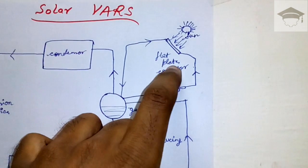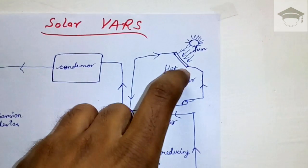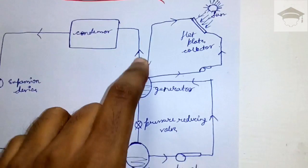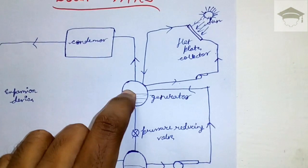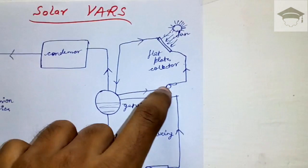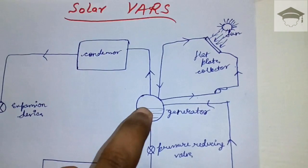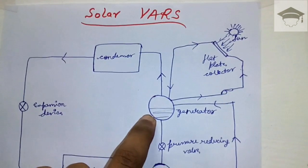This water gives the energy in the generator, then it is recirculated. The concentrated solution takes the heat from this circuit, and then the refrigerant separates. In the condenser, the heat is rejected.